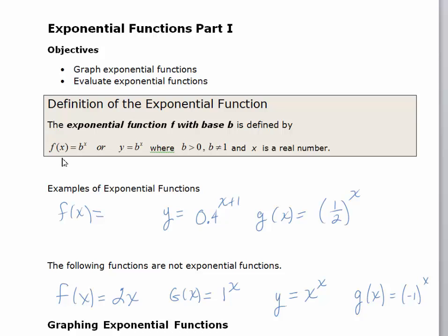An exponential function is a function in this form, where f(x) equals b to the x, and b is a constant that's greater than 0, but not equal to 1, and x is a real number. Here, the variable is in the exponent, and the base is a constant.